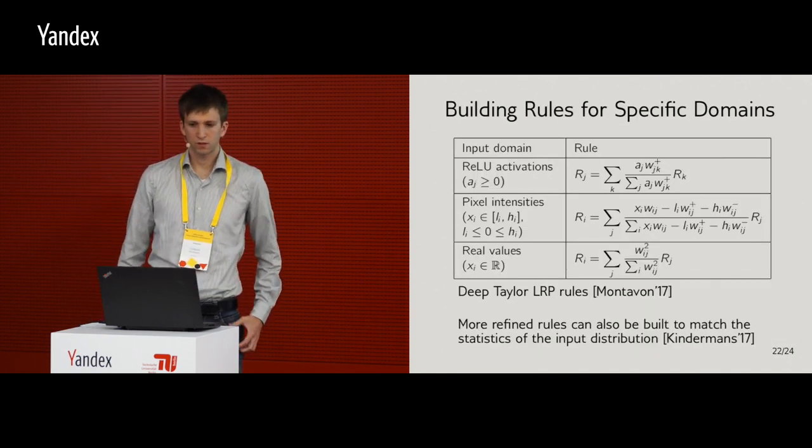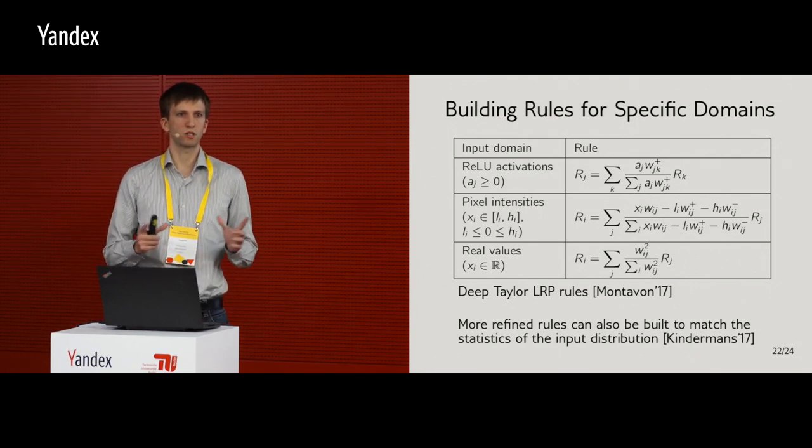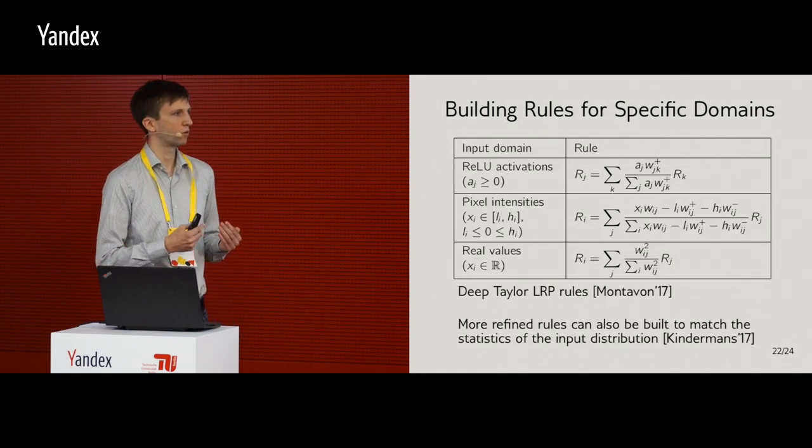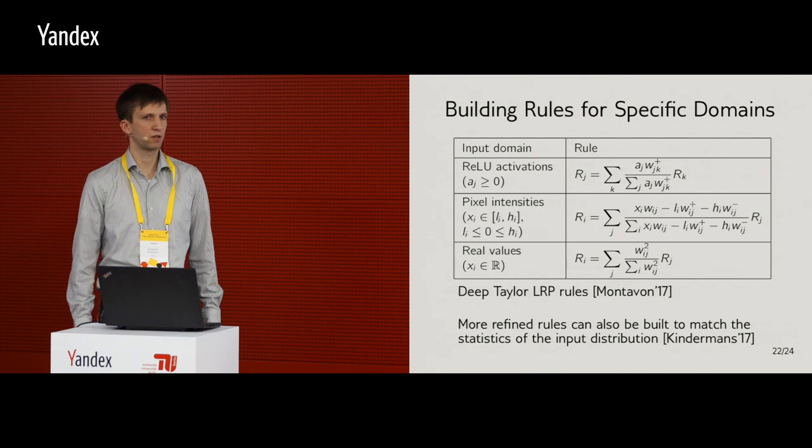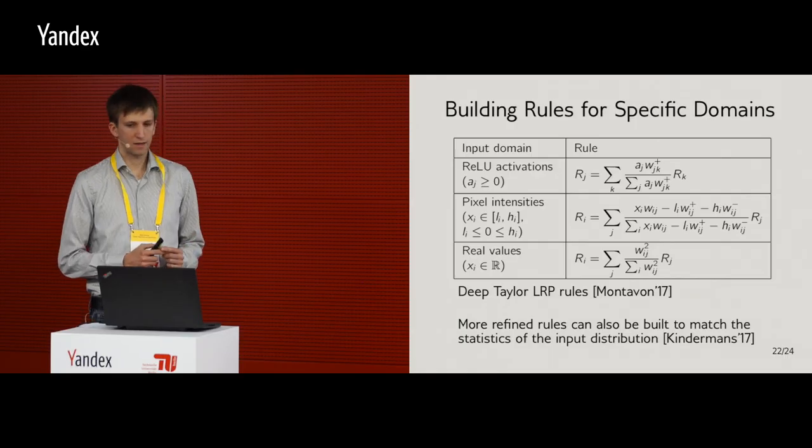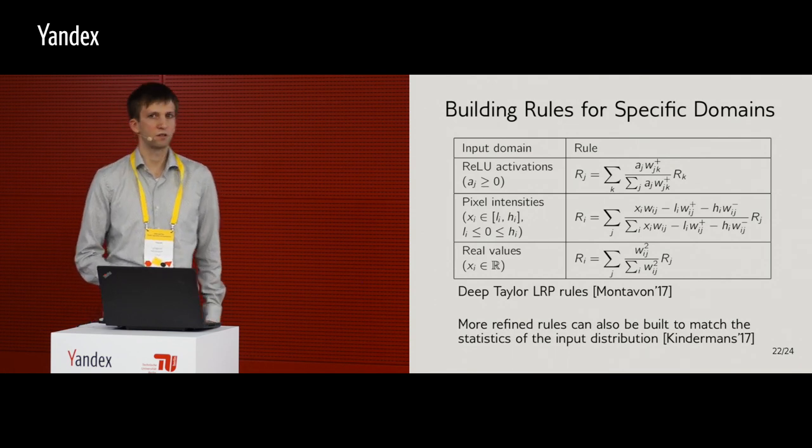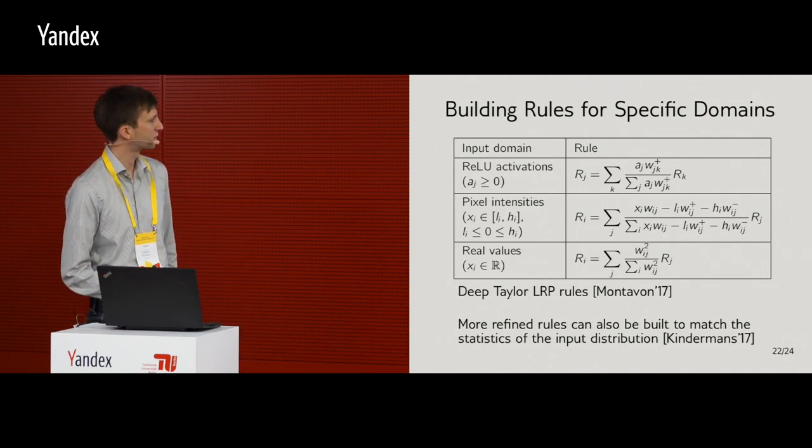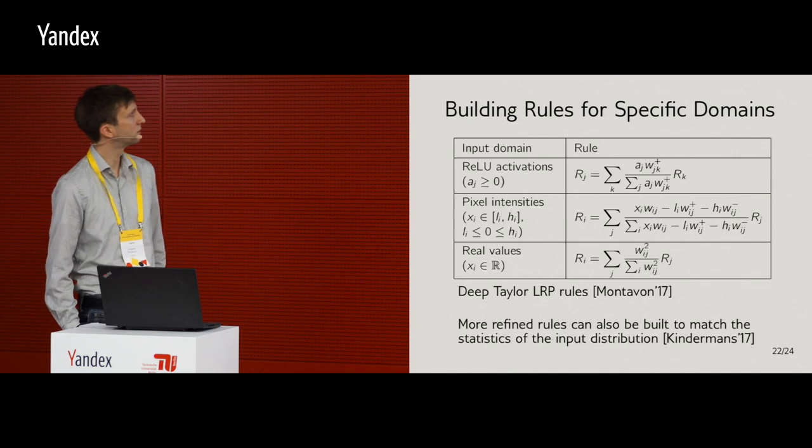So, now that we have this rule for propagating, we can say, okay, why don't we use the same strategy to consider a different domain? Because ReLU activations are just one type of input layer, one type of input for a layer. Sometimes some layers, for example, input layers, they receive pixel intensities that might be negative. They might also receive real values. So, in fact, you can tune this parameter of the root search to guarantee this domain membership and this positivity of relevant scores, and then you always get different rules. So, you have this one for pixel intensities and this one for real values. And there's a colleague, Peter-Jan Kindermans, who went one step further. He actually built a rule that matched the statistic of the input distribution, not only the domain.